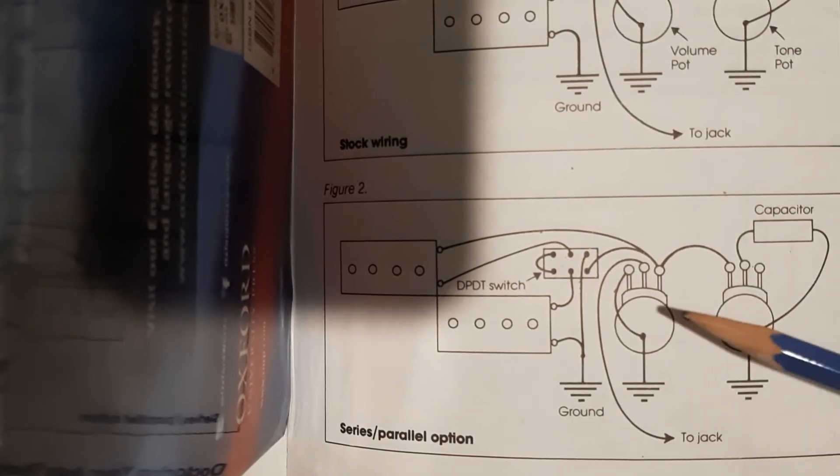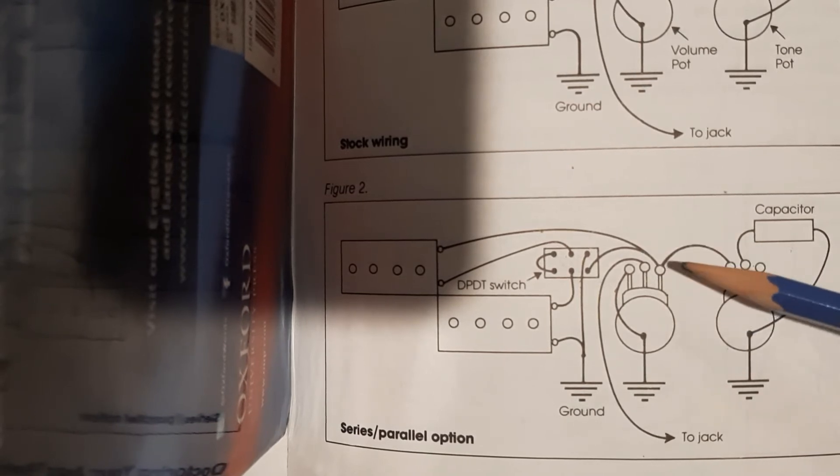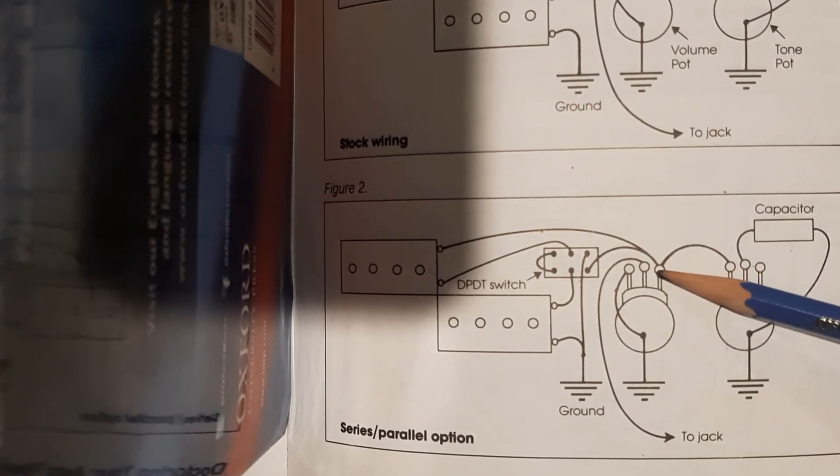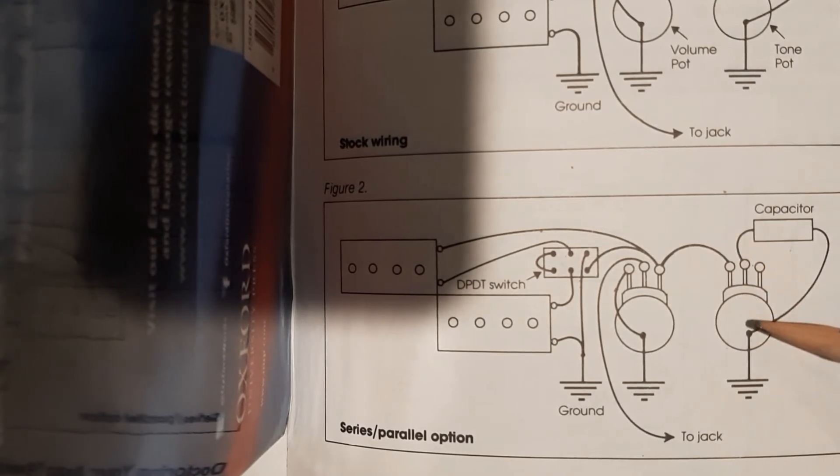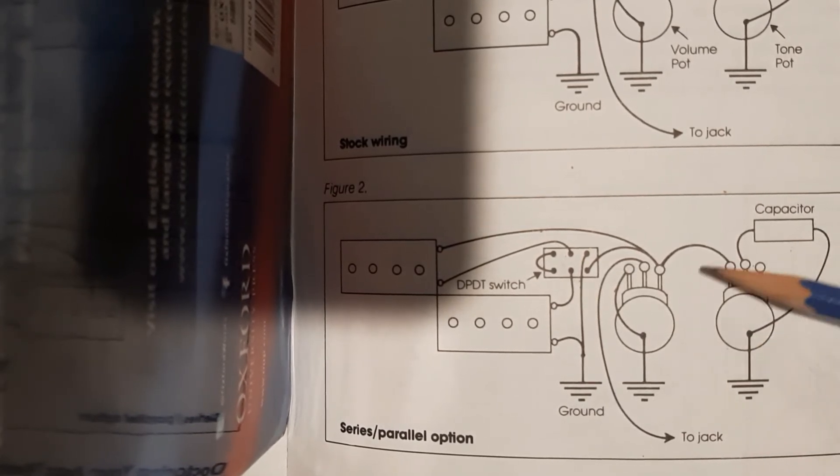Then we go over to, we have a lug that comes from, it's tied into the same one as our pickups go to our volume pot. We have this other potentiometer here and that's our tone pot. It's the exact same pot as this is. What it does is it takes that signal and it has a capacitor here.